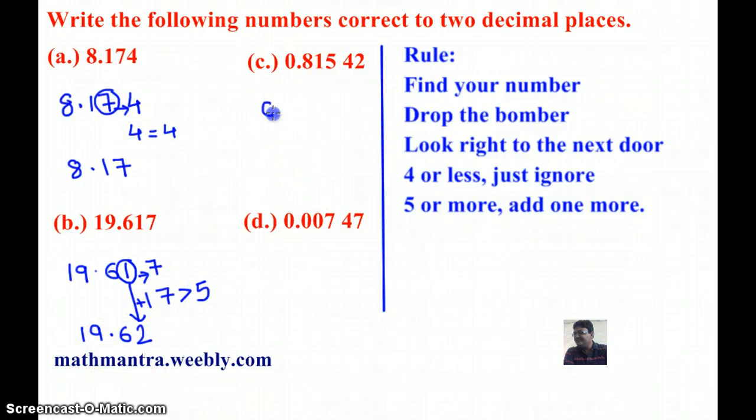Next, question number C is 0.81542. So, the number at the second decimal place is 1 and the next door number is 5.